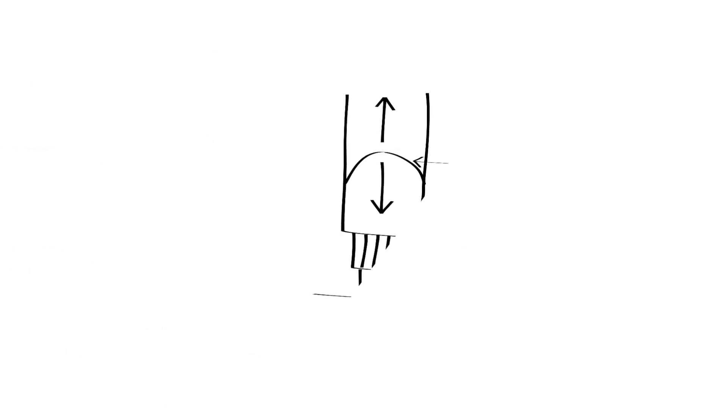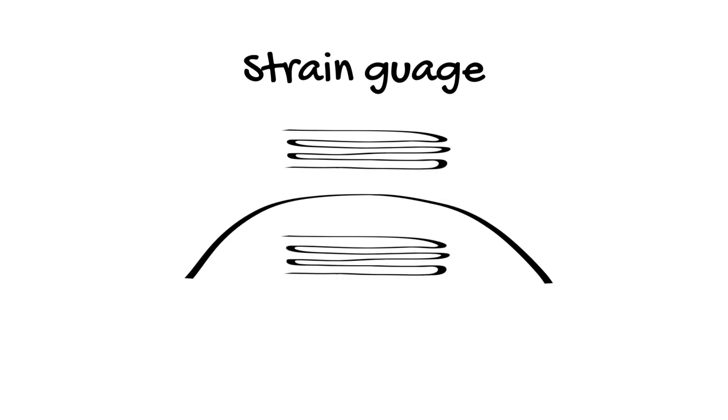The transducer contains a flexible diaphragm which is pushed up and down by the continuous column of fluid as it moves through the cardiac cycle. On either side of the diaphragm is a component called a strain gauge.